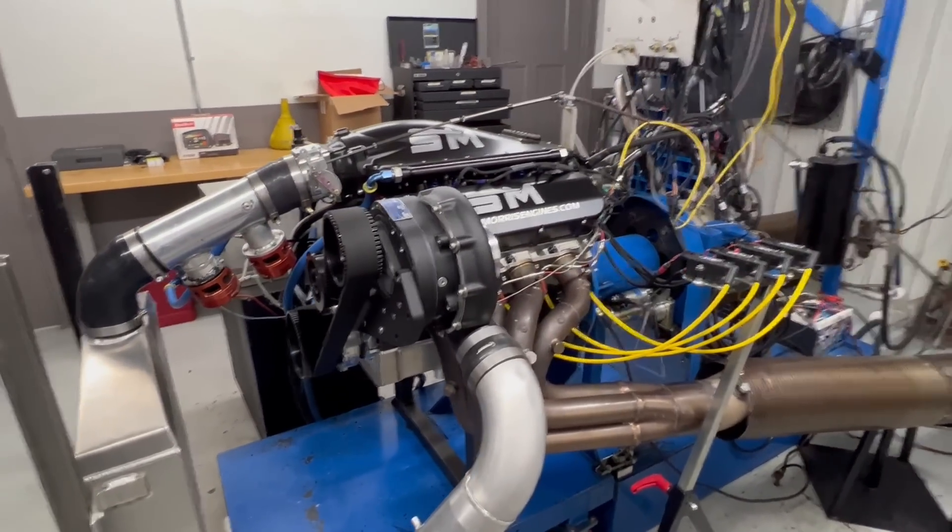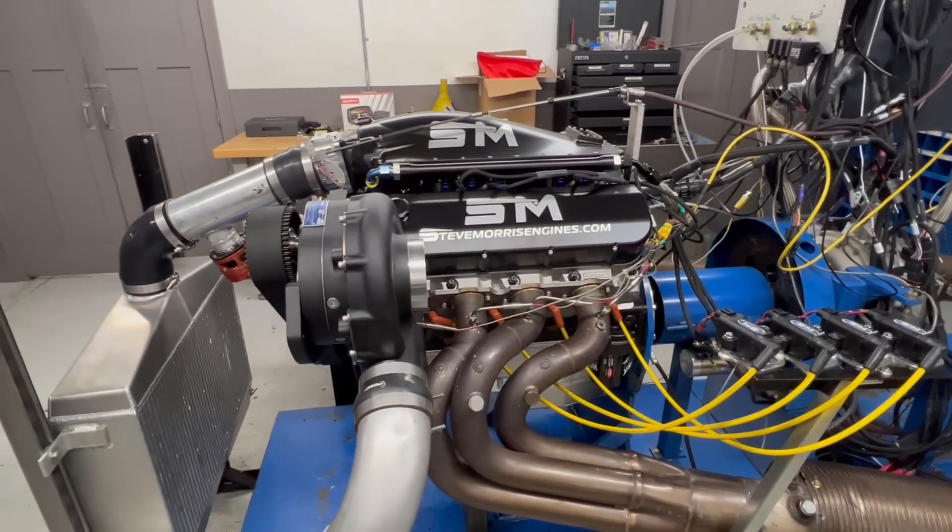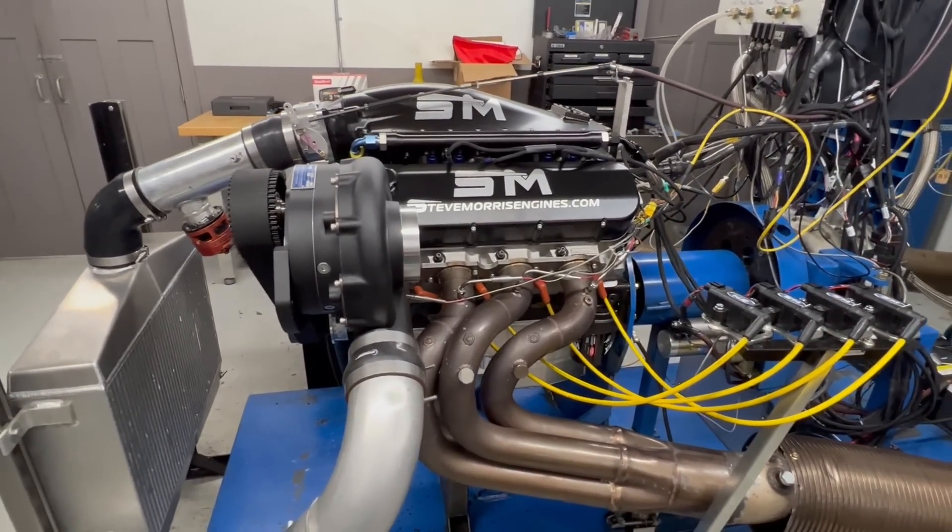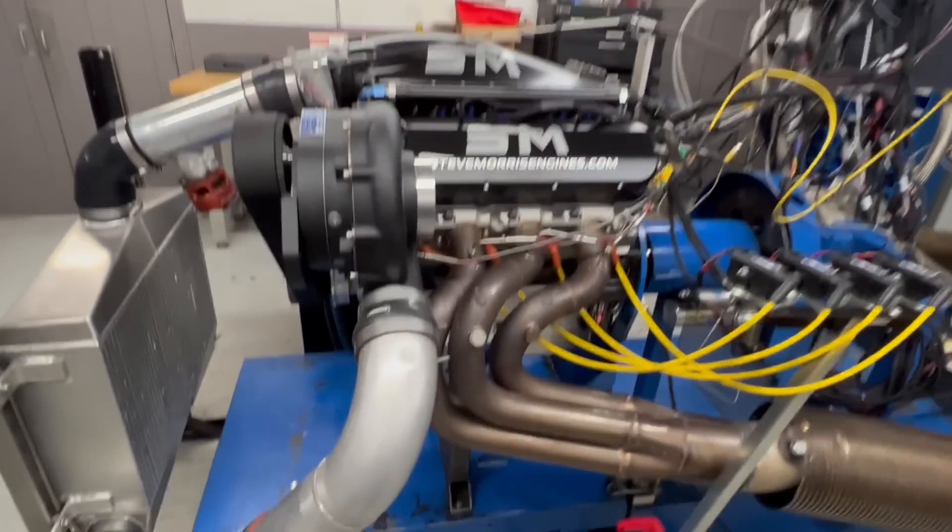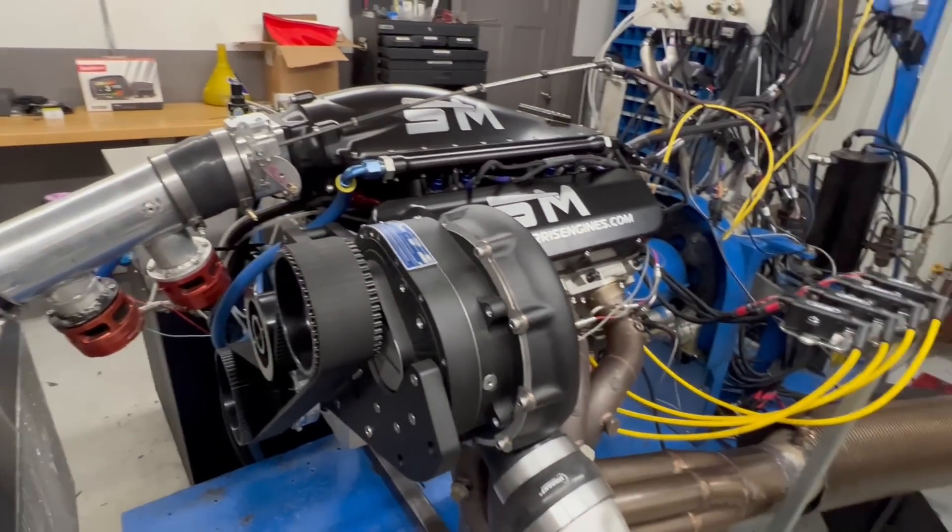It's a Dart Block, Molnar Crank, R-Connecting Rods, Diamond Pistons, Brodex Conventional Heads. This particular one is a Pro Charge piece, so it's got an F2 Pro Charger on it.